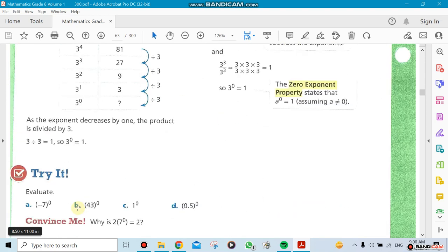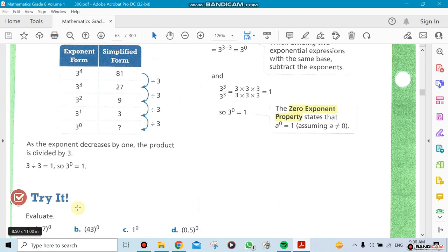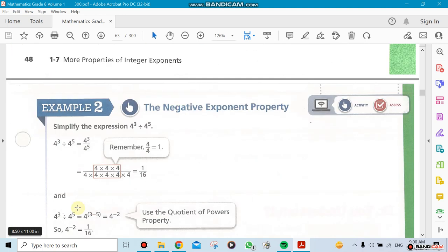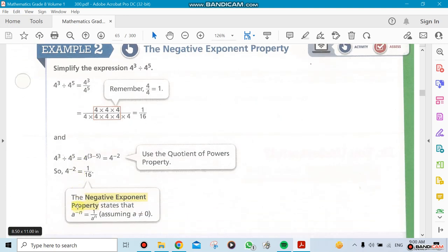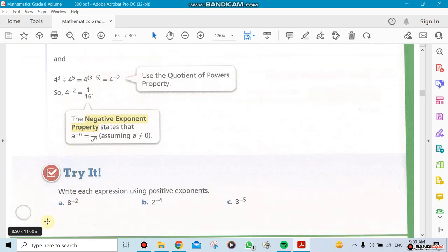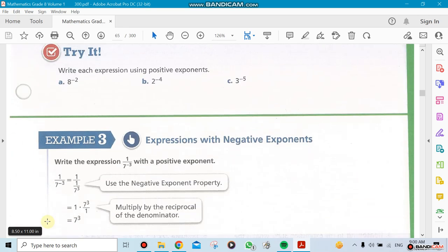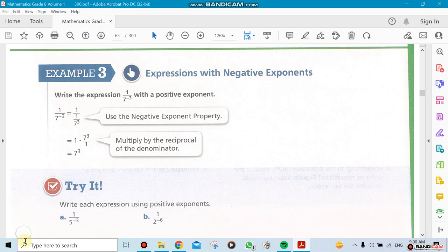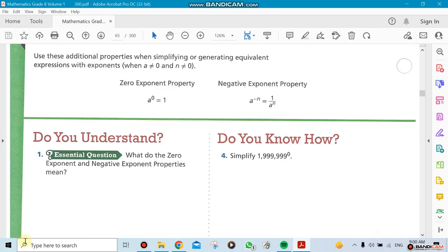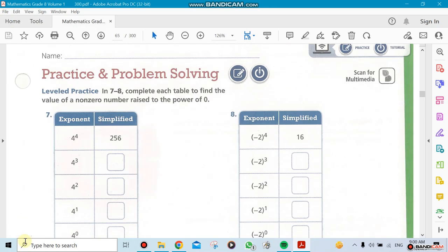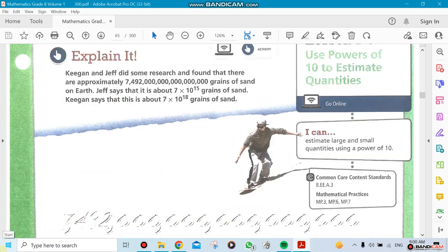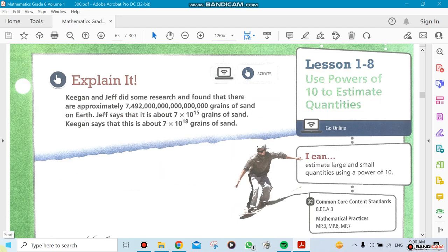The first section, which is 1.7, we're going to be mentioning the negative exponent property. We're going to be mentioning also the exponents with negative exponent expression with negative exponent, and also we're going to go to 1.8.